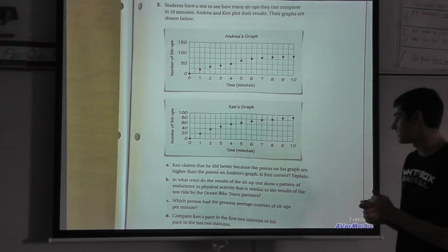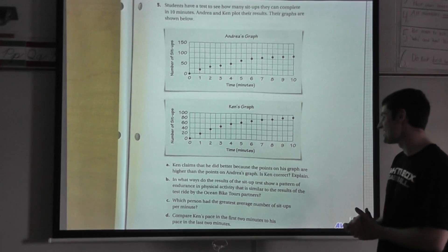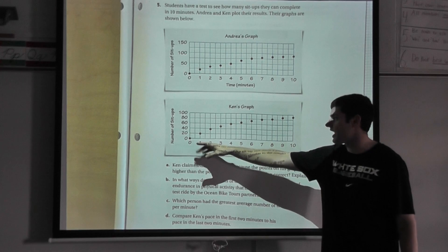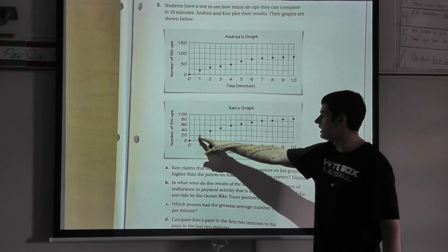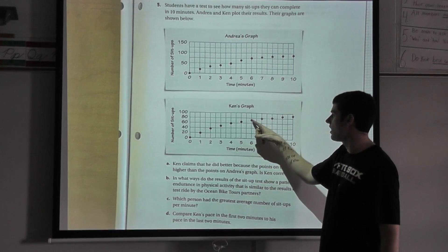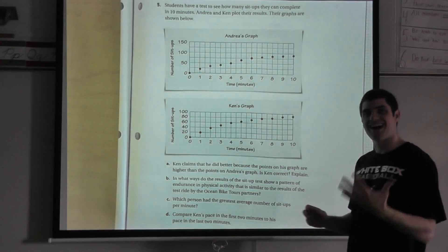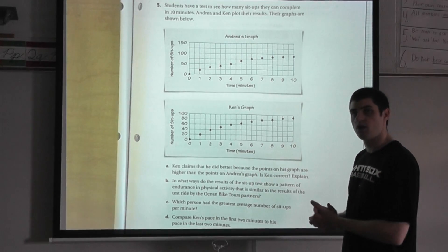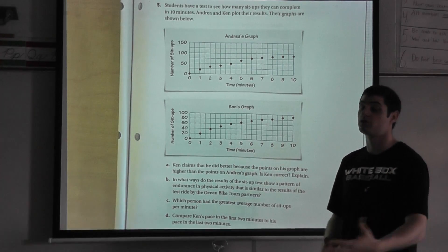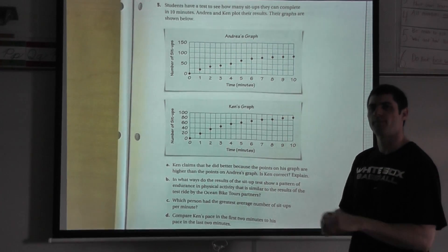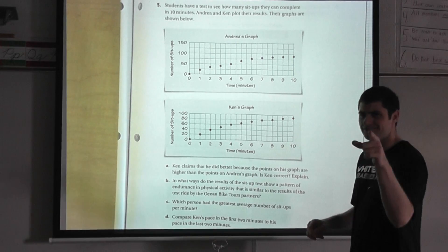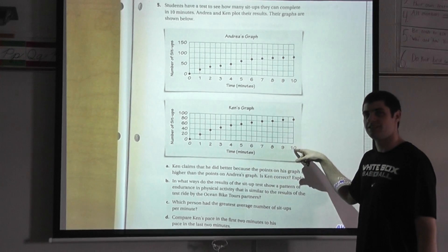Last one. It says compare Ken's pace in the first two minutes to his pace in the last two minutes. So let's look at Ken's graph. He's doing pretty good. He gets about 20 in, gets about 19 in there. Starts to kind of slow down a little bit. So if I were looking at his pace, I would say that it slows down. Well, how can I prove that? Mr. Lehner, you always tell us, go back to the text, look at your problems, prove to me, justify. How do you know that? Well, I'm going to ask myself that question. Mr. Lehner, how do you know that his pace slowed down? Well, let's take a look.